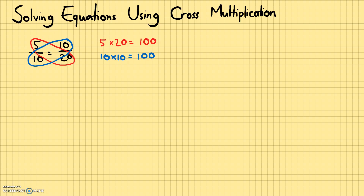We can use this same principle when solving equations. Let's start with something easier: 1 half equals x over 6. What does x equal? This case is easy because 2 times a certain number gives us 6. I'll use dots for multiplication so you don't confuse it with the variable x. 2 times 3 equals 6.